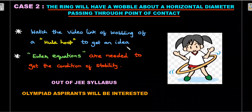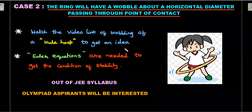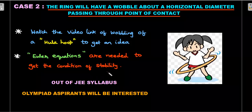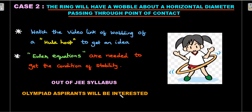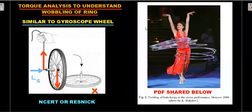I've placed a real-life 20-second hula hoop video link in the description — watch it in slow motion to see the wobble clearly. This wobbling creates a gyroscopic effect. These effects can only be solved using Euler's equations, which are not part of the JEE syllabus. There's also a specific condition for stability — a particular radius and angle at which stability is acquired. Olympiad aspirants will be interested, and we'll cover it in a future video.